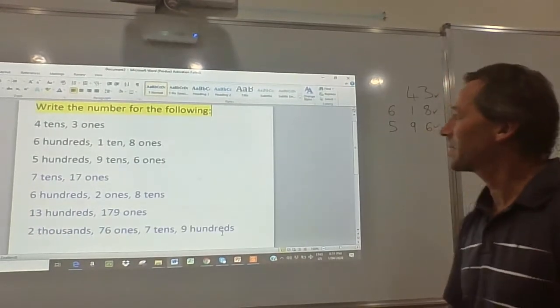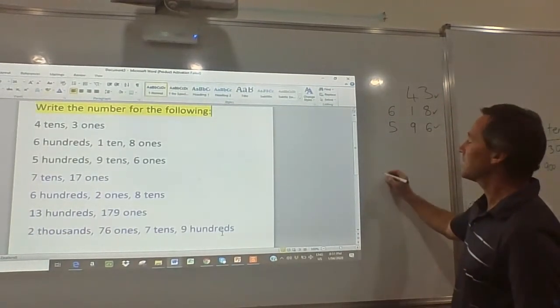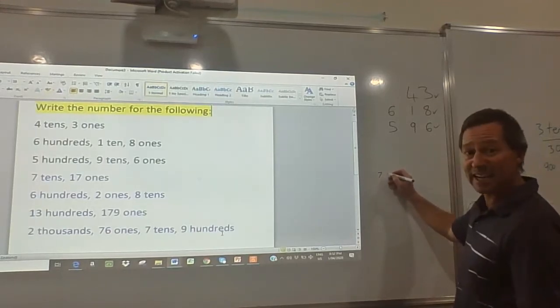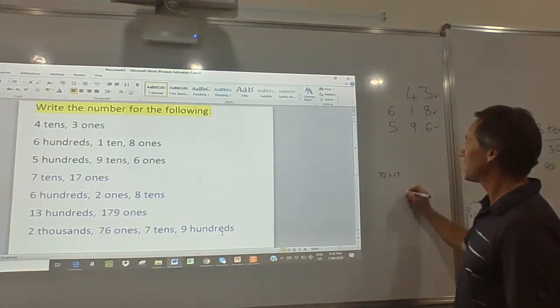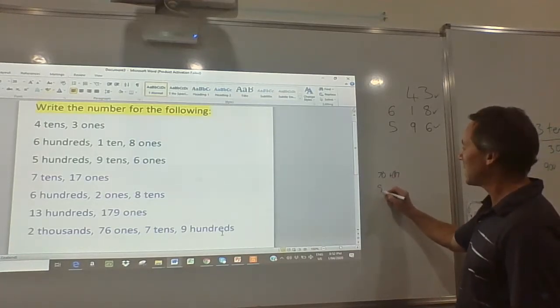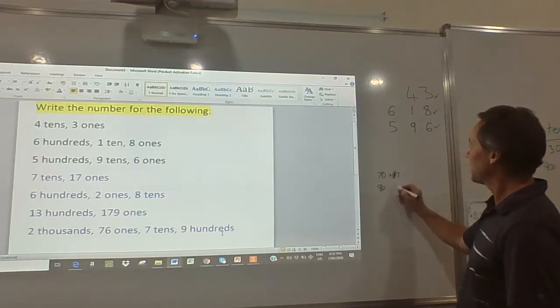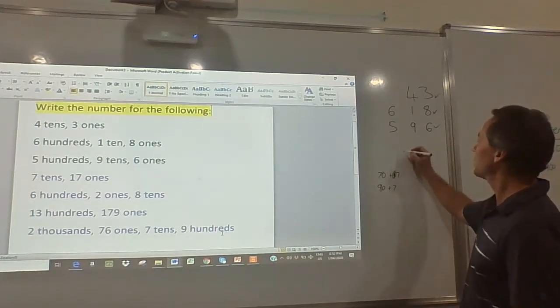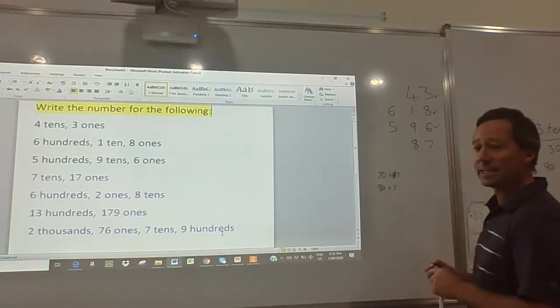Now we're on to the tricky ones. Okay, so the next step is you have to do a little bit of calculating. So 7 tens and 17 ones - so it's 70 plus 17 ones. I'll move that 10 over to here, becomes 80. That becomes 7, so the answer would be 87.